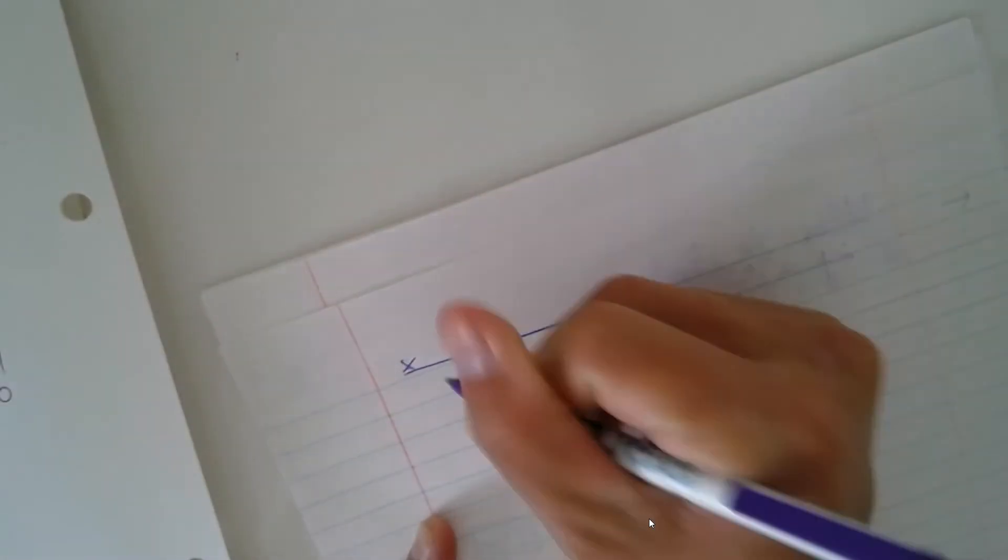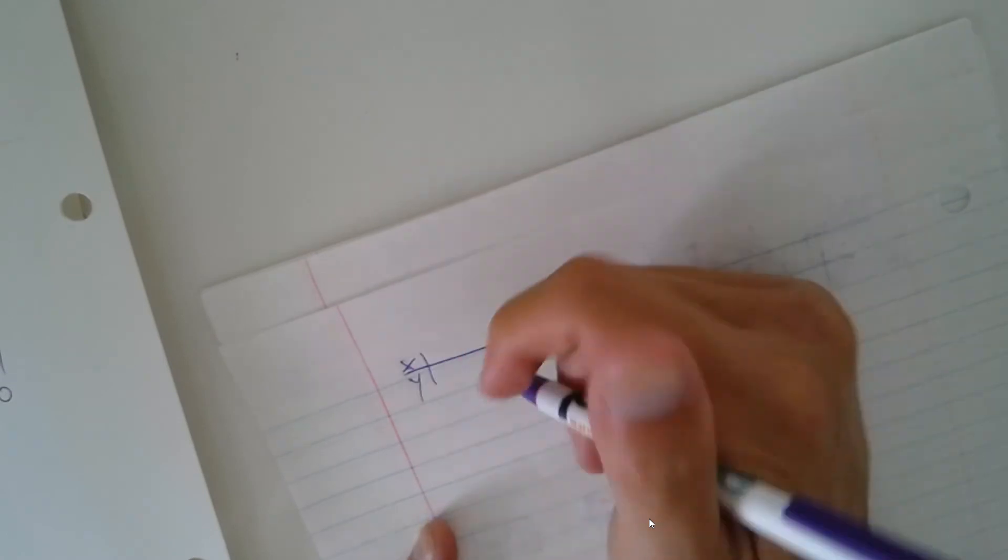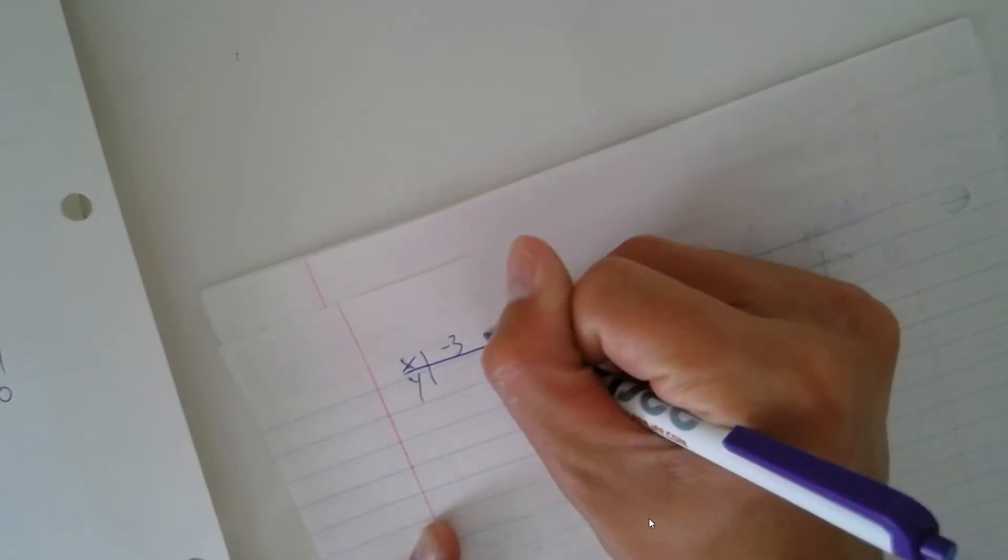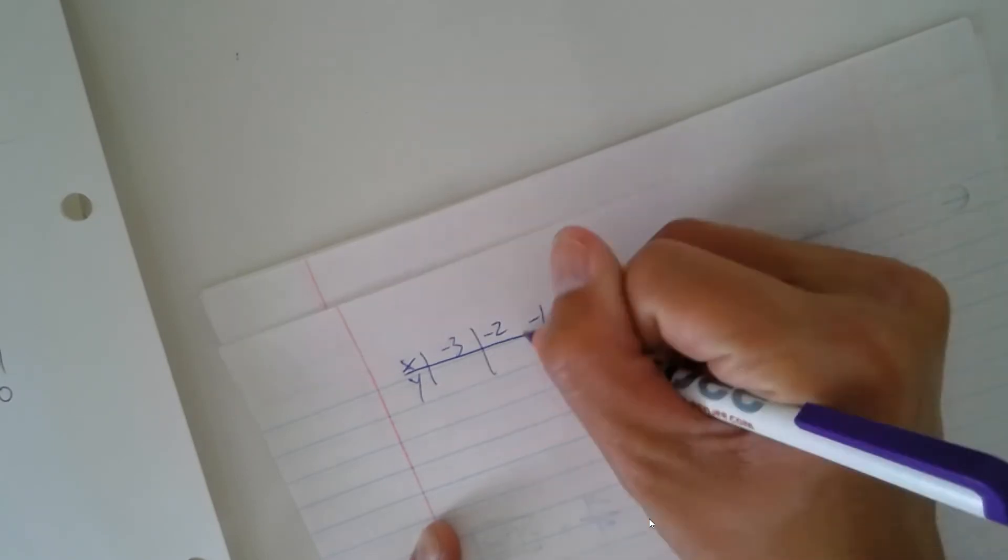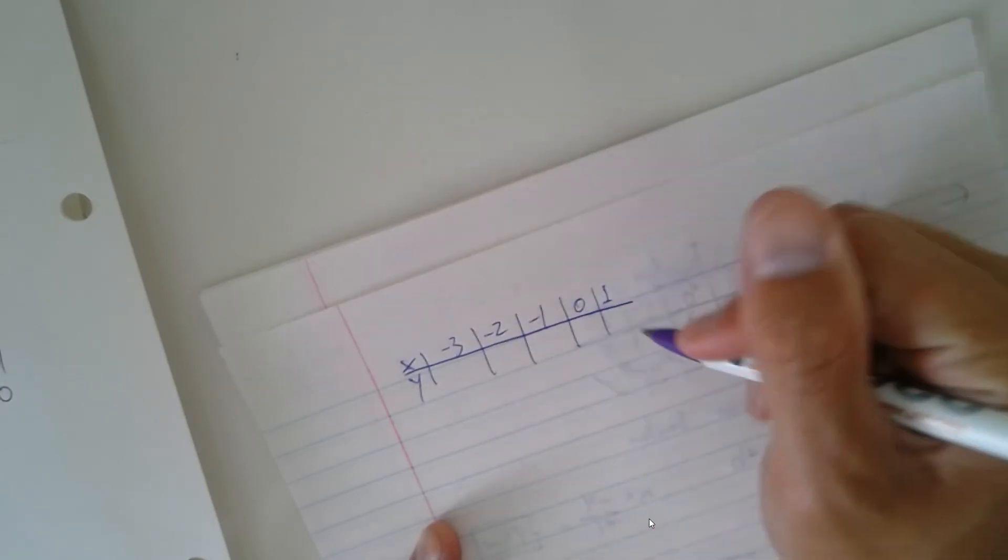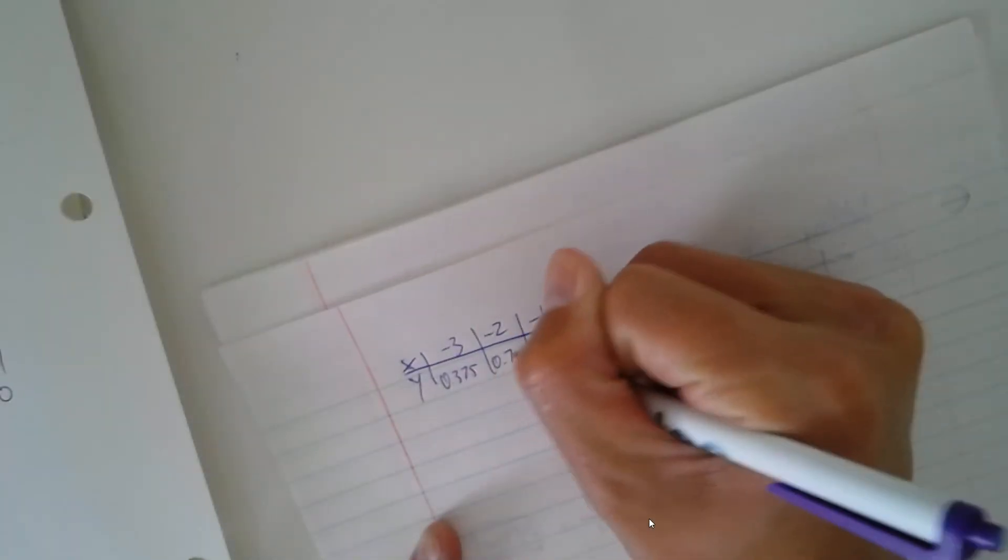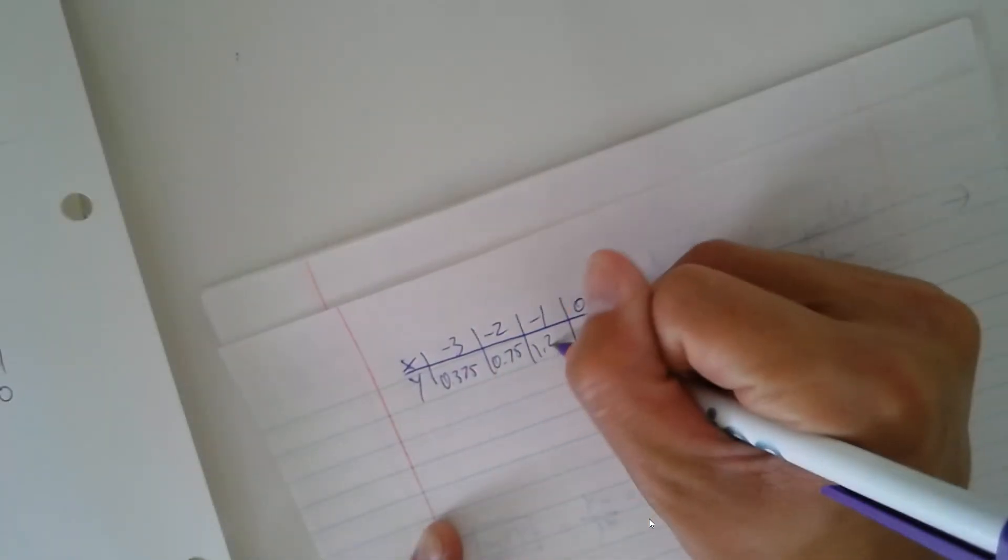The last problem that we're going to look over is the last one that we did on the board to check to see what type of function this is. This is negative 3, negative 2, negative 1, 0, 1. This is 0.375, this is 0.75, this is 1.5, this is 3, and this is 6.